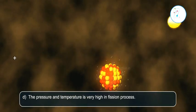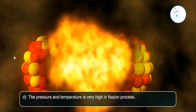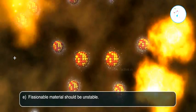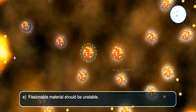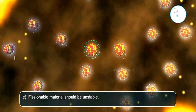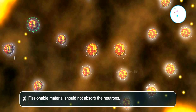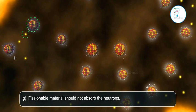Point D: Pressure and temperature are very high in the fission process. Point E: Fissionable material should be unstable. Point F: Slow-moving neutrons. Point G: Fissionable material should not absorb the neutrons.